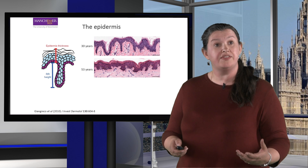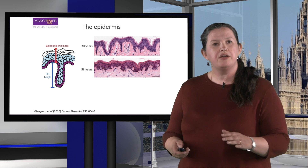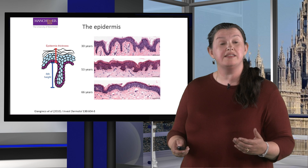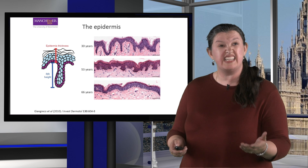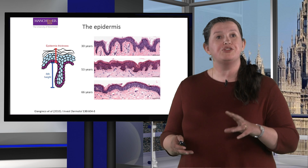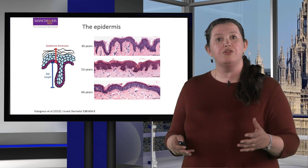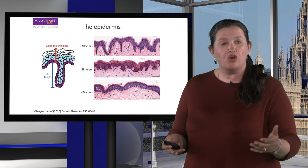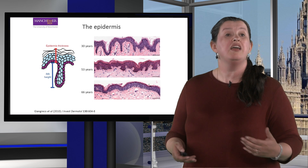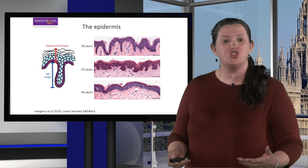As we age — this is a 53-year-old — those undulations become less, and by the time we reach older years, in this case a 66-year-old, we've lost a lot of these undulations. This is why clients may complain that when they shave, for example, their skin might break more easily — it becomes more fragile.